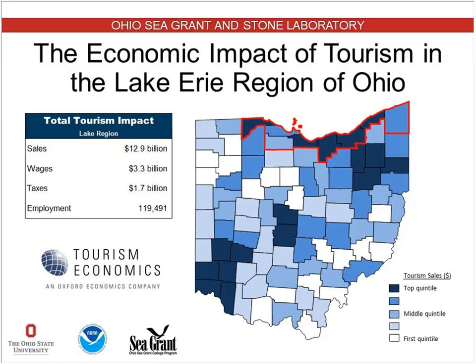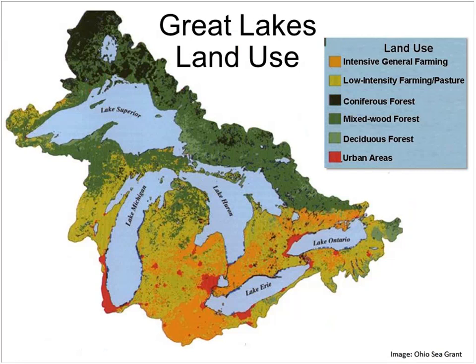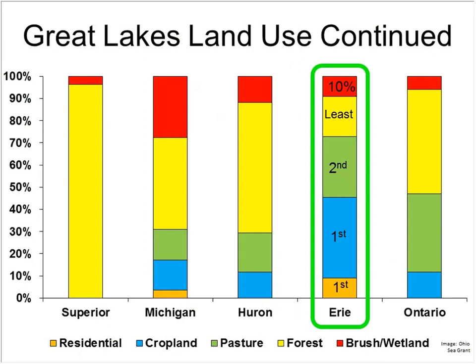This is a land use map of the watershed of the Great Lakes. Specifically if you look at Lake Erie, it's surrounded by a lot of reds, yellows, and oranges — urban areas and farming or pasture use. If you break this down into a graph, you'll see that Lake Erie is first in residential land use, so we have the most people in our watershed relative to the other four Great Lakes. We're first in cropland and only second in pasture. We have the least amount of forested area relative to the other four Great Lakes.